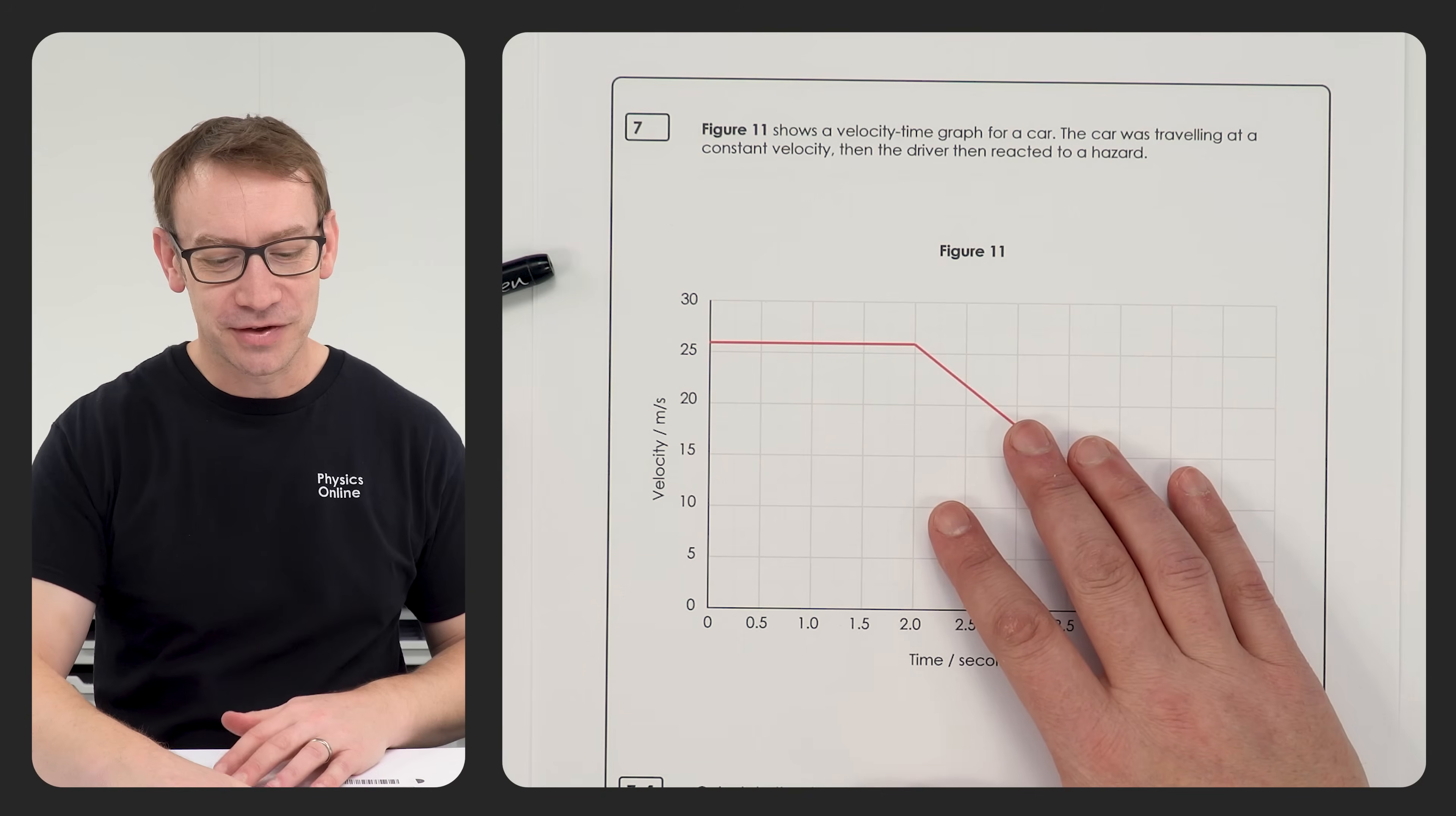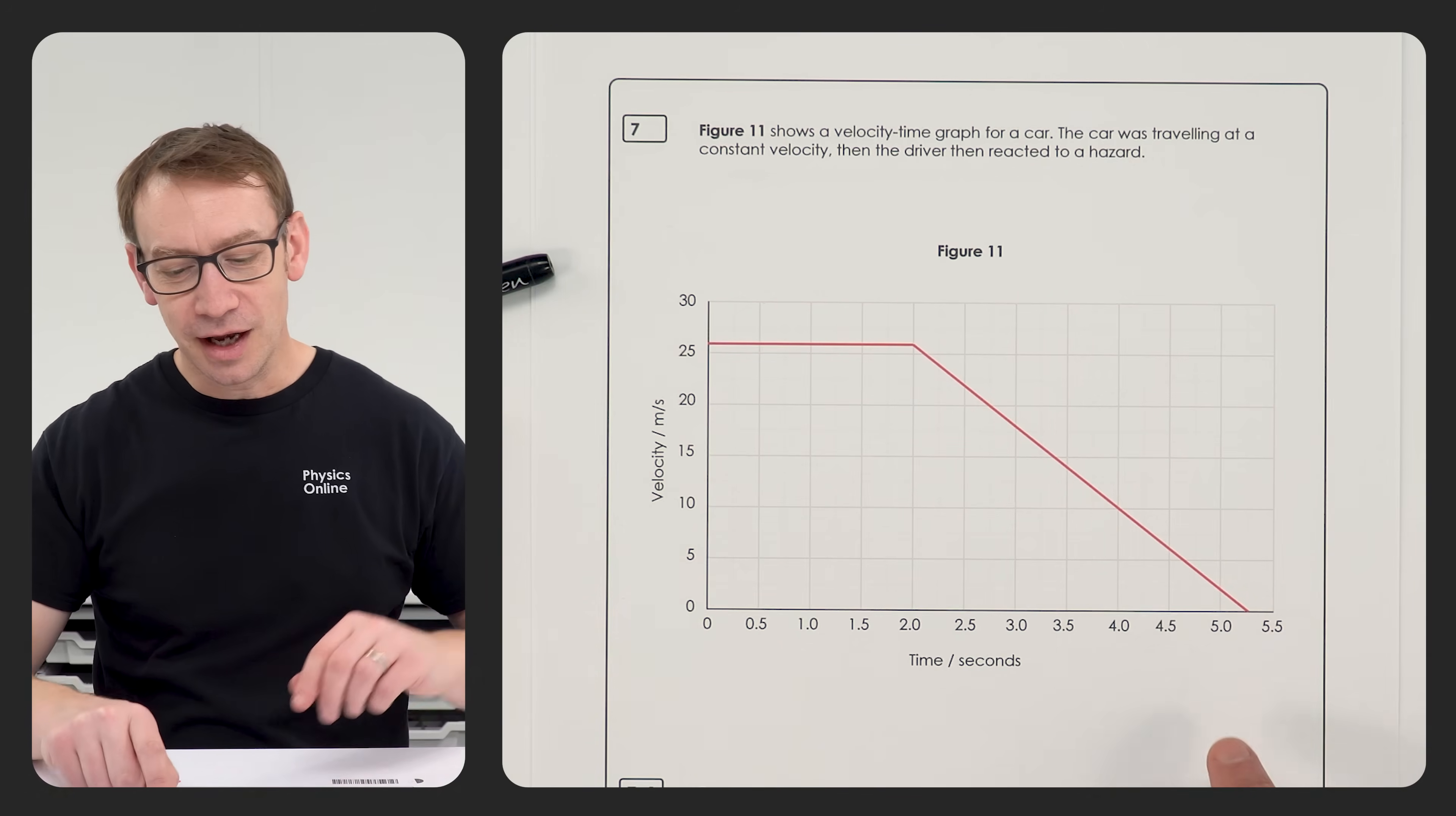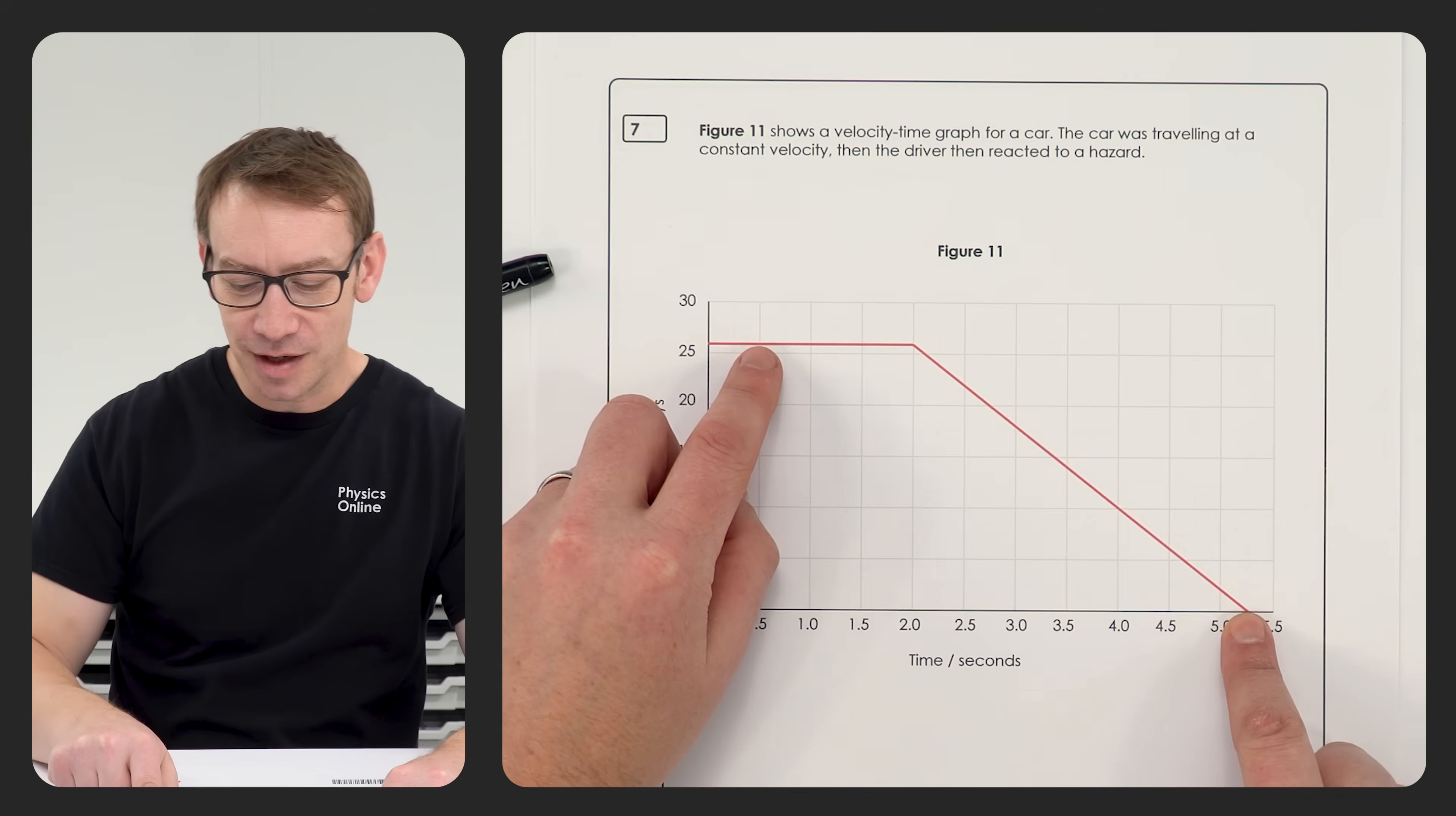Now let's have a look at the question. What we have is a velocity time graph for a car and this shows the journey where a car is going at constant velocity, the driver then saw the hazard, they put the brakes on and they came to a stop.